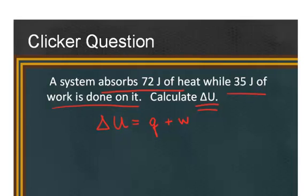Q, the system absorbs heat. So Q here, the magnitude, the numerical value is 72 joules, and the system absorbs that heat. So that's heat being added to the system. So that's going to have a positive sign.